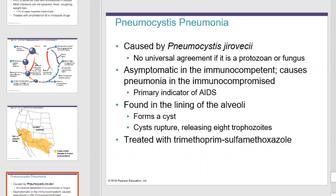Pneumocystis pneumonia is caused by Pneumocystis. There is no universal agreement on whether this is a protozoan or a fungus. People who contract this are sometimes asymptomatic. It causes pneumonia in the immunocompromised and is a primary indicator of AIDS. It is found in the lining of alveoli where it forms cysts. The cysts rupture and release trophozoites to spread the infection.